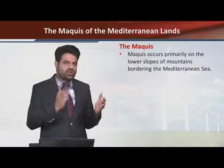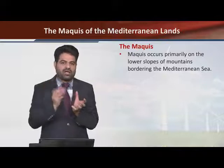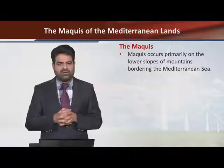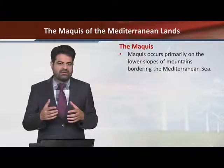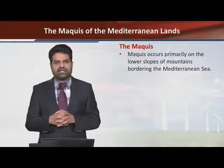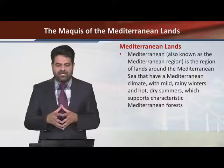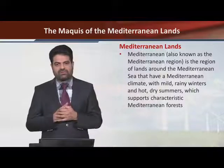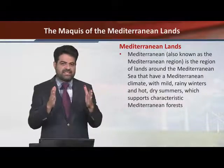Mountains کی جو lower slope ہے وہاں تھوڑی سی مٹی جمع ہو جاتی ہے اور accordingly انہیں پانی جو ضرورت کا ہے وہ ملتا ہے۔ Mediterranean Sea کے bordering areas میں اس طرح کے plants زیادہ پائے جاتے ہیں۔ Mediterranean also known as the Mediterranean region is the region of land around the Mediterranean Sea۔